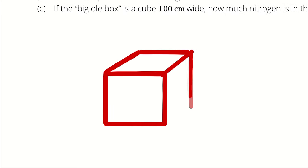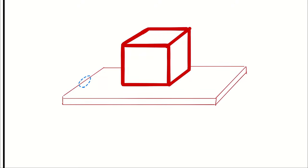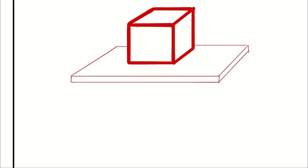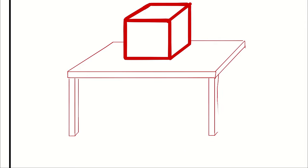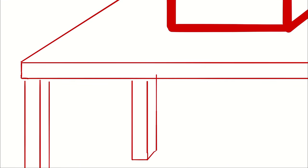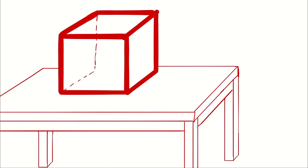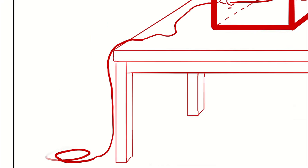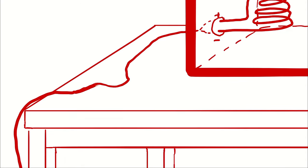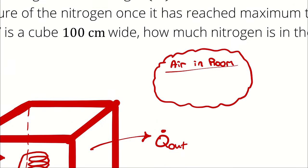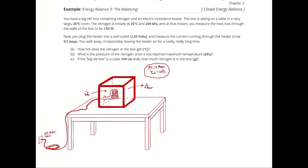I will begin with a drawing. With that expert drawing in place, we can start to talk about what's actually happening here. We have a rate of electrical work entering our system, and that rate of electrical work is going to increase the temperature of the nitrogen.